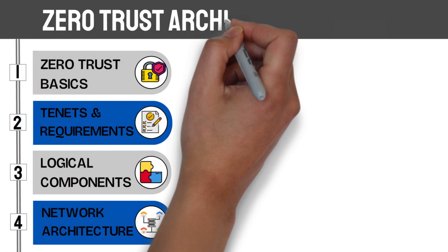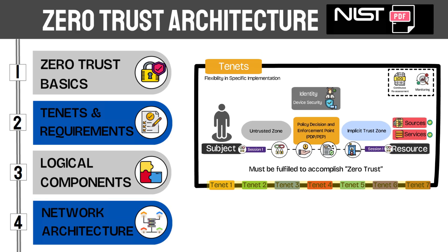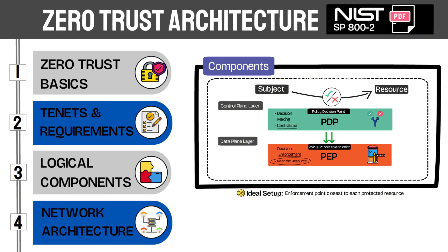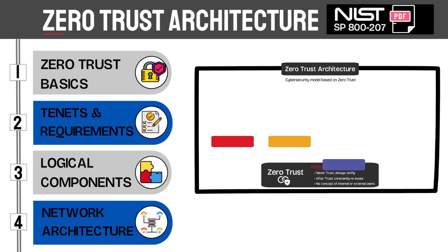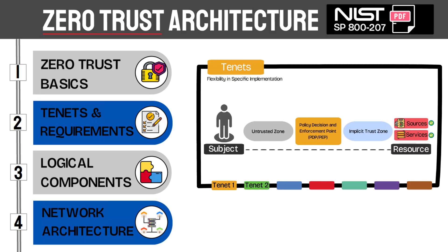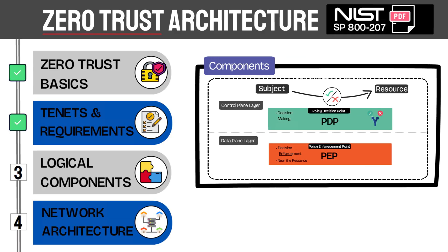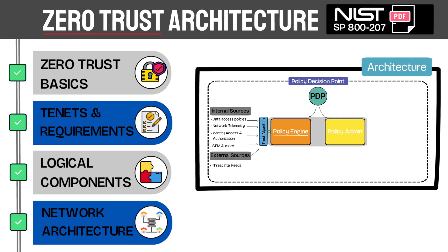In this video, we're going to explore how to implement zero trust on a network by reviewing the official architecture guide developed by NIST. Special Publication 800-207 is widely considered the definitive blueprint for zero trust, and we're going to break down the key takeaways across four main sections. We'll start by reviewing the fundamentals of zero trust, including the core tenets and principles behind this cybersecurity model. Then we'll take a deep dive into the logical components of a zero trust architecture and explore the various technologies that bring this all together. By the end of the video, you should have a clear understanding of what a zero trust architecture entails and how it operates within a network.